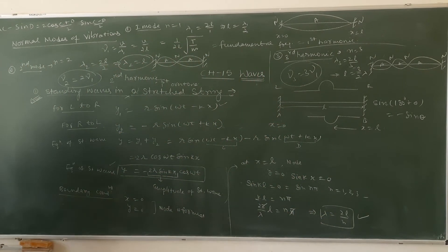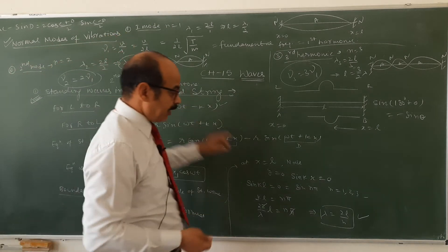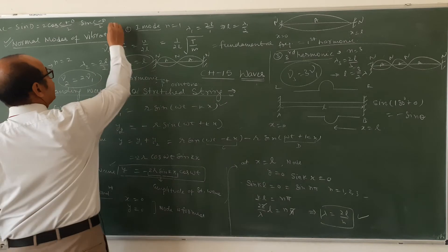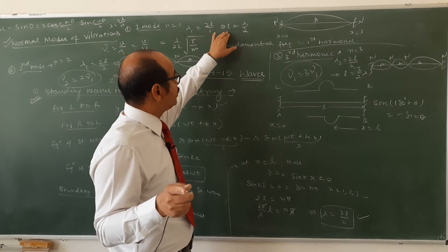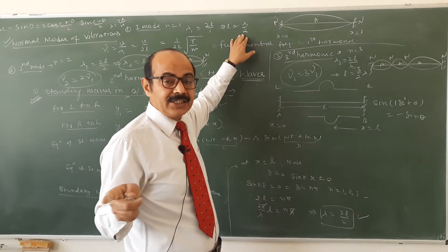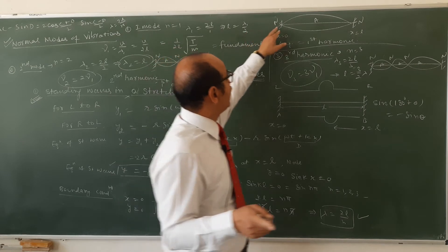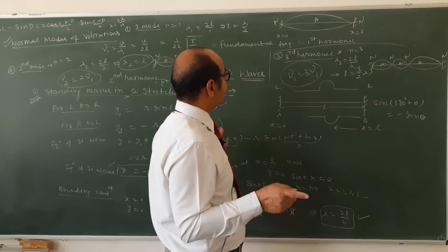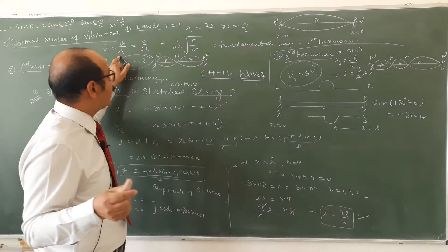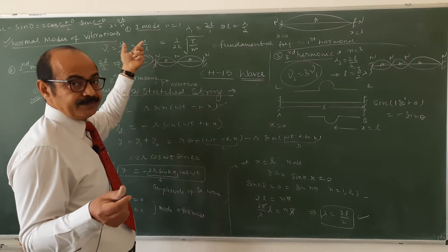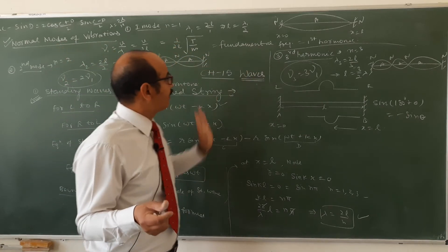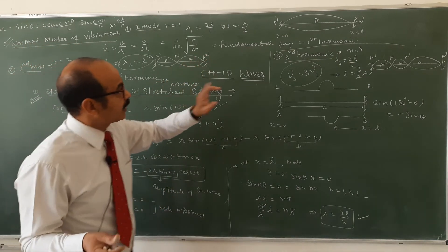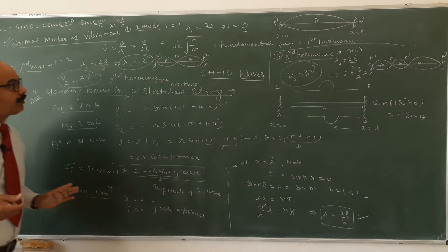Normal modes of vibration. First mode: n = 1 लिखेंगे, तो λ₁ = 2L. इसका मतलब L = λ₁/2 — in the whole length of the string, only half a wave will be formed: half incident, half reflected. Frequency: ν = v/λ = v/(2L). Since v = √(T/m), so ν₁ = (1/2L)√(T/m). इसको बोलते हैं fundamental frequency और first harmonic. Diagram में: यह node बन गया, यह node बन गया, बीच में antinode बन गया.